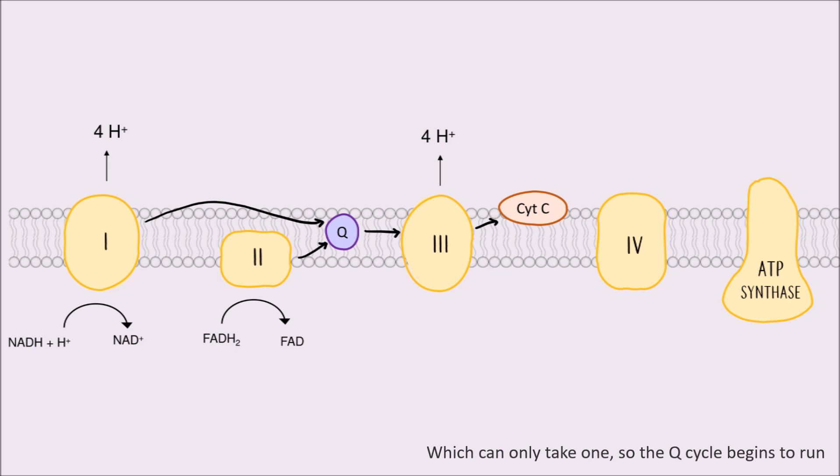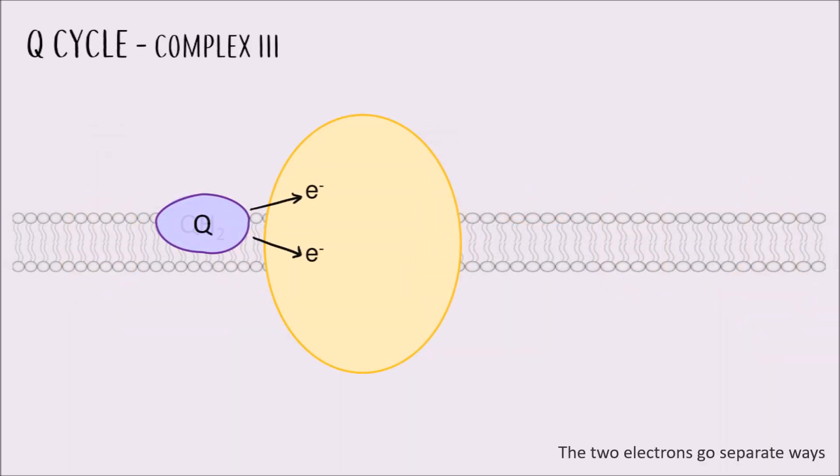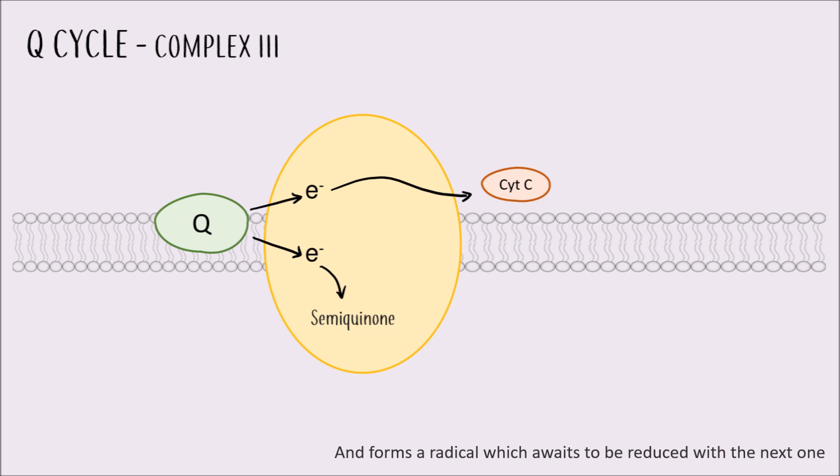The two electrons go separate ways: one through complex 3, the other stays now forming the semiquinone radical, which awaits to be reduced with the next one.